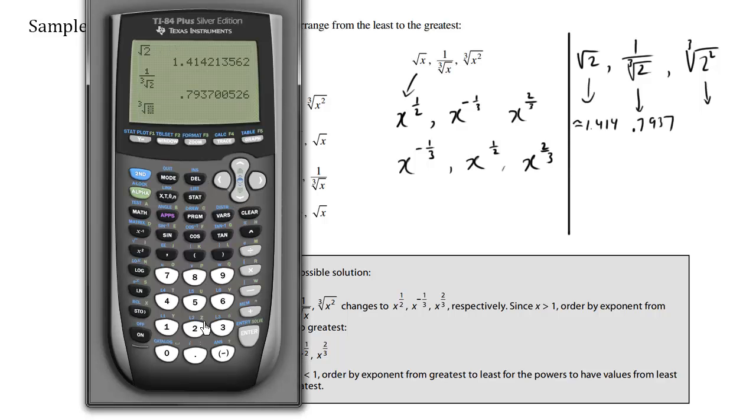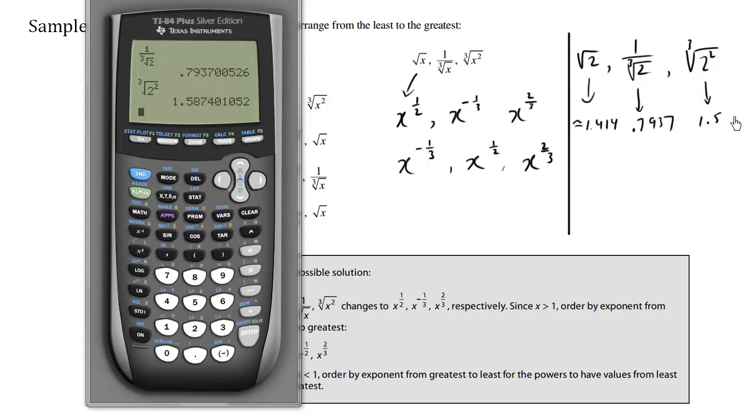This one here would be approximately .7937, and finally the last one here would be the cube root of 2 squared, which is 4 obviously, but press enter, this one here is approximately 1.587.